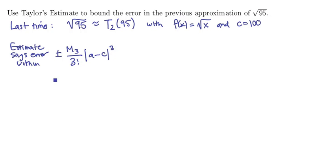And so in this case that's plus or minus m3, 3 factorial is 6, a is the value we approximated 95, and c is the center 100, this to the third power.